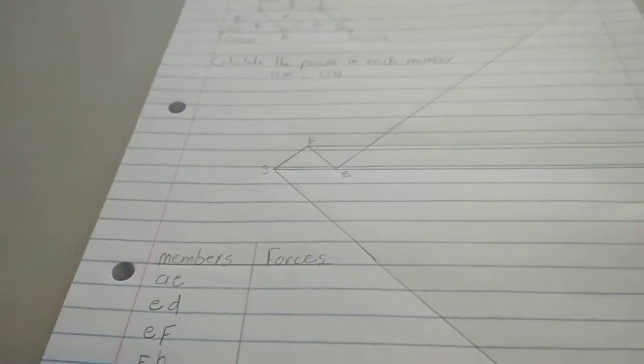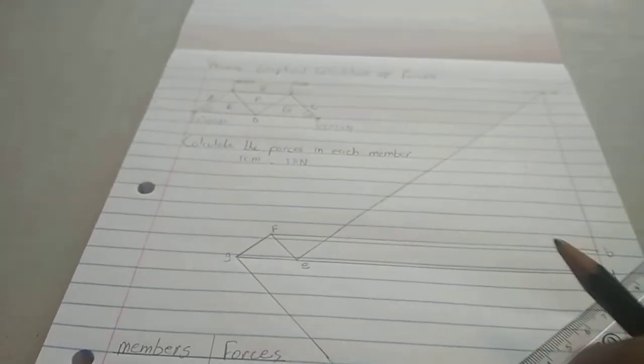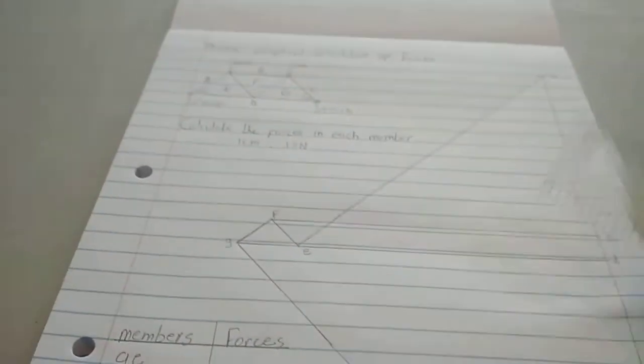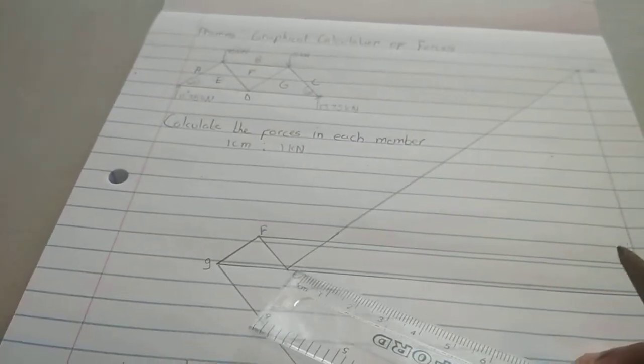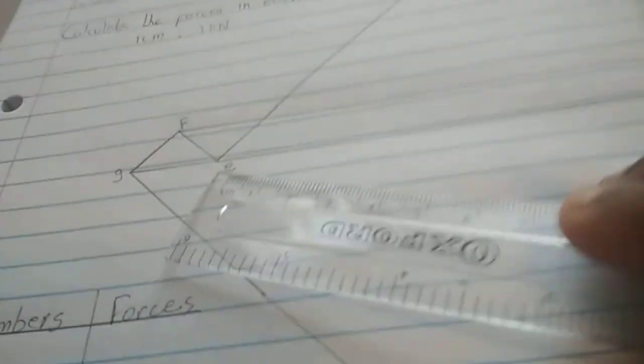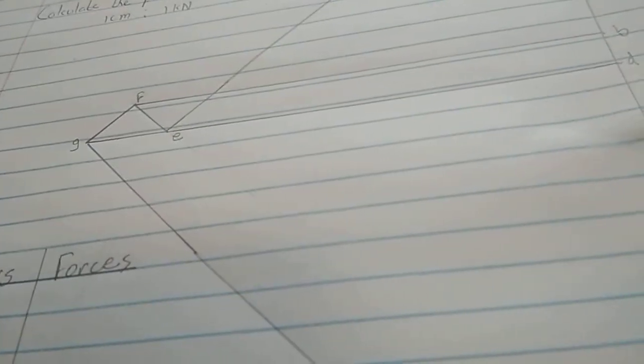Now to get the forces of each of the members, we need to measure from our force diagram the distance or the centimeters of each of the members. For example, AE. We go to the force diagram, we look for AE. So this is A up there to E down here. So we need to measure that, how long that is going to be.